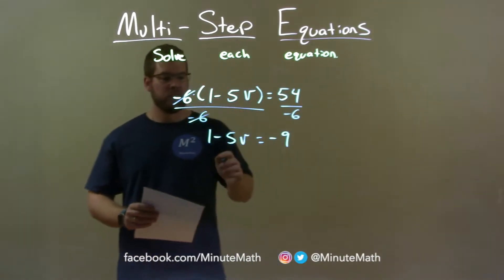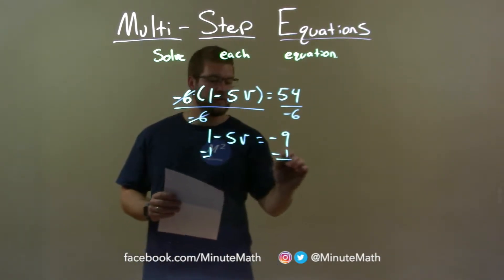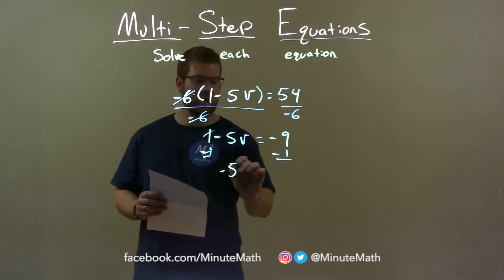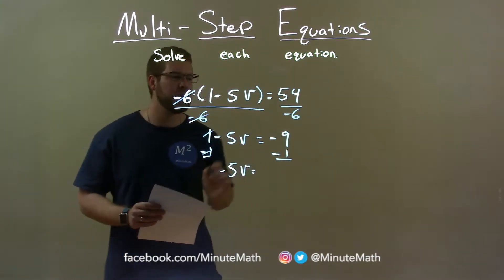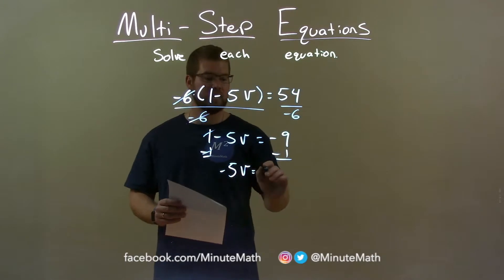In my journey to get V by itself, I should subtract 1 from both sides, giving me negative 5V by itself on the left, and negative 9 minus 1 is negative 10.